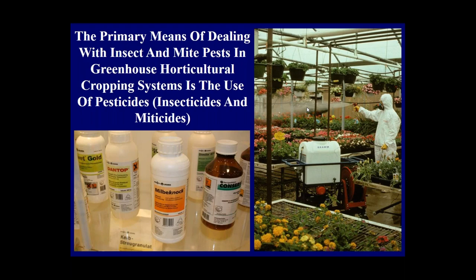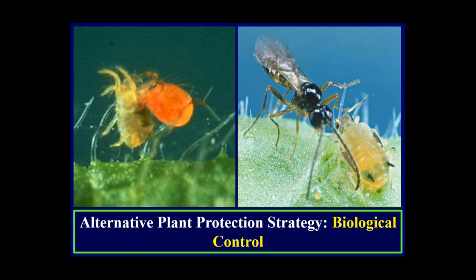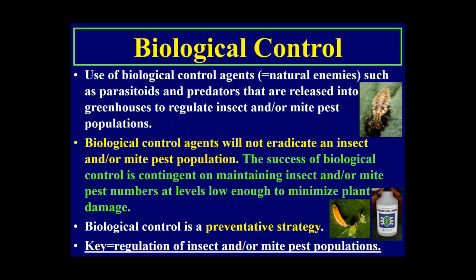There have been issues with using pesticides in greenhouse production systems, which has led to the increased use of another strategy called biological control. It's an alternative plant protection strategy that involves using good insects or mites to kill the bad insects or mites. For example, a parasitoid killing an aphid, and a predatory mite eating a two-spotted spider mite.